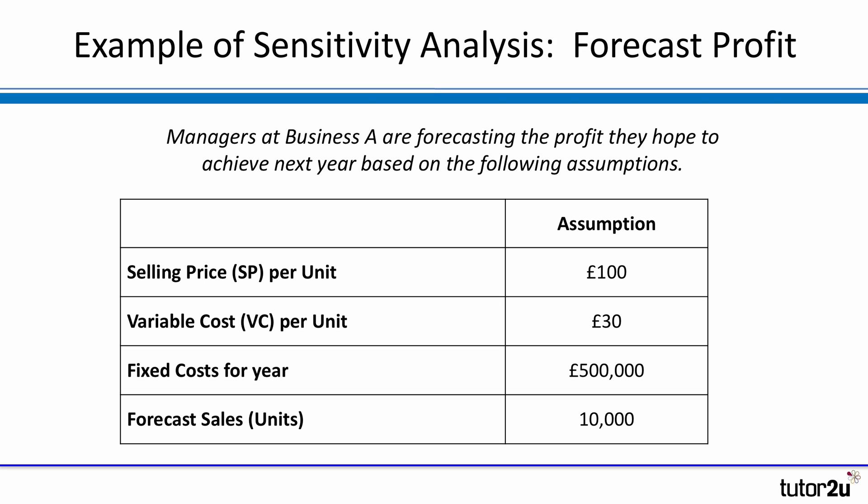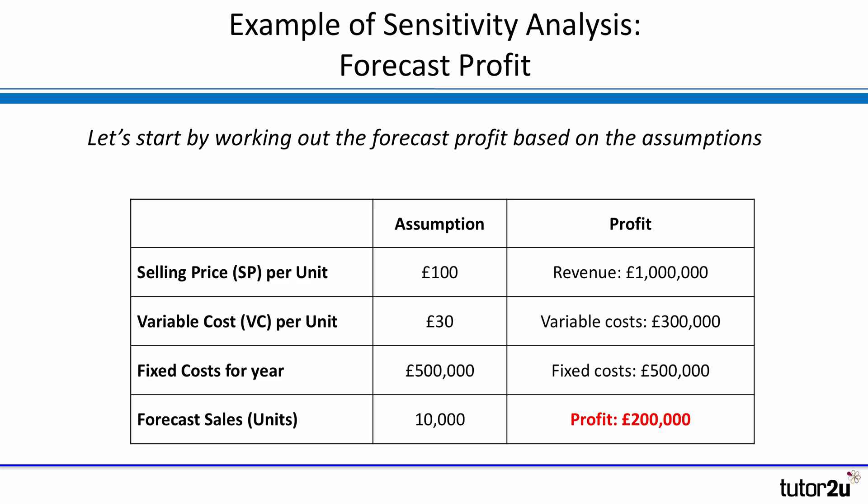Let's take a look. The forecast profit is £200,000. Applying those assumptions: 10,000 units at £100 per unit gives revenue of £1,000,000. Variable costs are 10,000 units at £30 each, which is £300,000. Fixed costs are £500,000. So profit — the difference between revenue, variable costs, and fixed costs — is £200,000. Our forecast is £200,000.